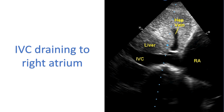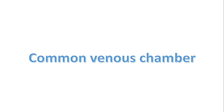All four pulmonary veins can be seen in a modified high parasternal view in children, known as the crab view. The common venous chamber and pulmonary veins in supracardiac and cardiac forms of total anomalous pulmonary venous connection can also be seen in a similar modified parasternal short axis view.